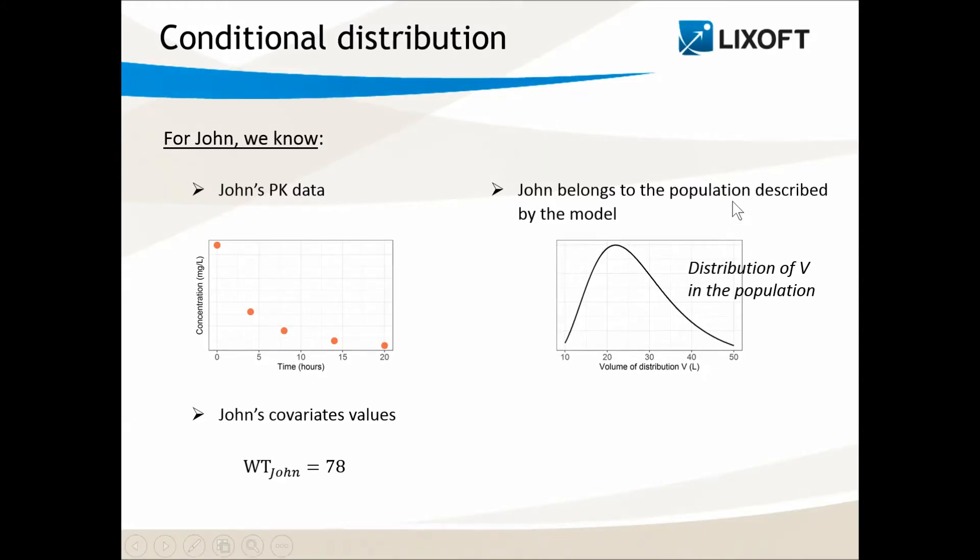We also know that John belongs to the population described by the model. This means John's volume cannot be much larger or much smaller than what is typical for the population he belongs to. Given all this information, we can estimate John's individual volume of distribution, but this value has some uncertainty associated to it. This uncertainty is described by a probability distribution, and this is what we call the conditional distribution.